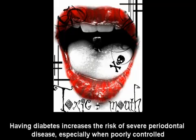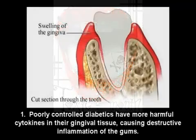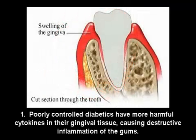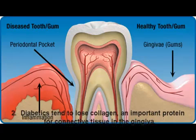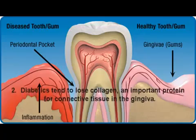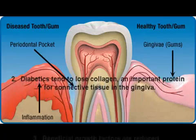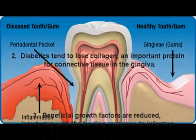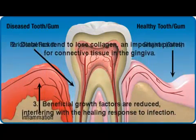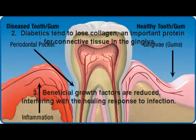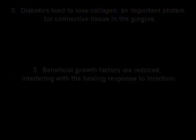Having diabetes increases the risk of severe periodontal disease, especially when poorly controlled. Poorly controlled diabetics have more harmful cytokines in their gingival tissue, causing destructive inflammation of the gums. Diabetics tend to use collagen, an important protein for connective tissue in the gingiva. Beneficial growth factors are reduced, interfering with the healing response to infection.